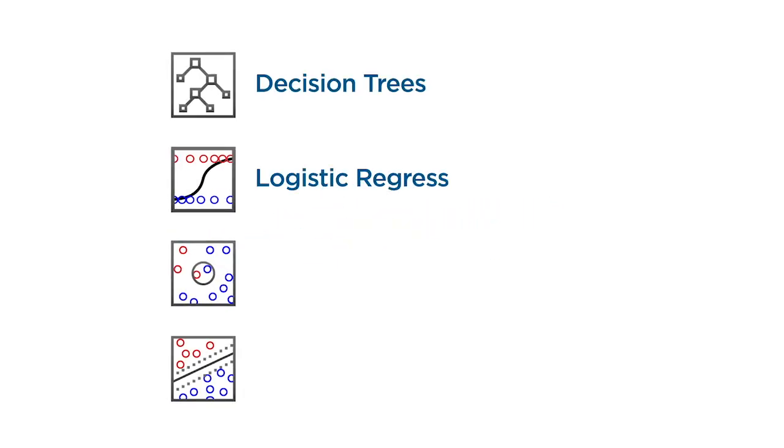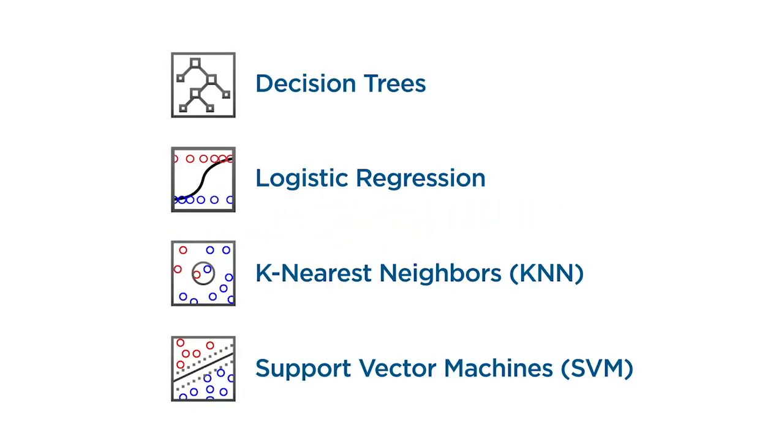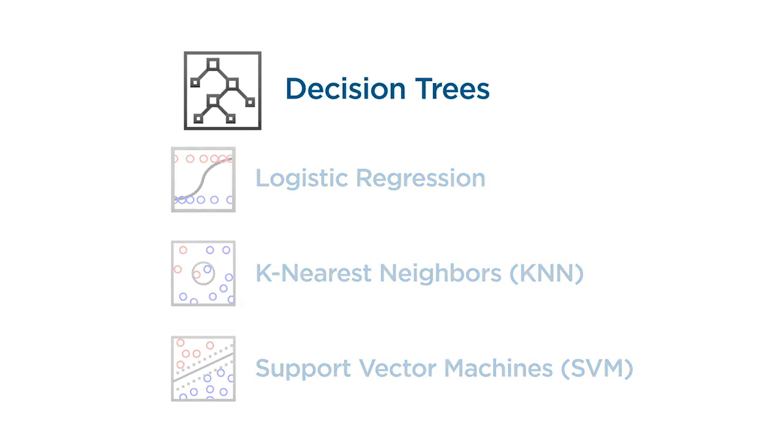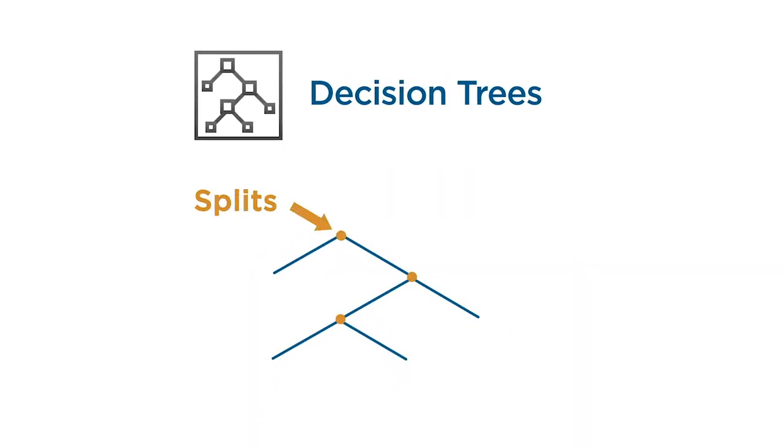A variety of classification models are available. Some of the most common ones are shown here. You already learned the basics about decision trees in regression. The main difference in the case of classification is that the response variable is now discrete, since possible outcomes are predetermined from your list of classes rather than computed based on the data.